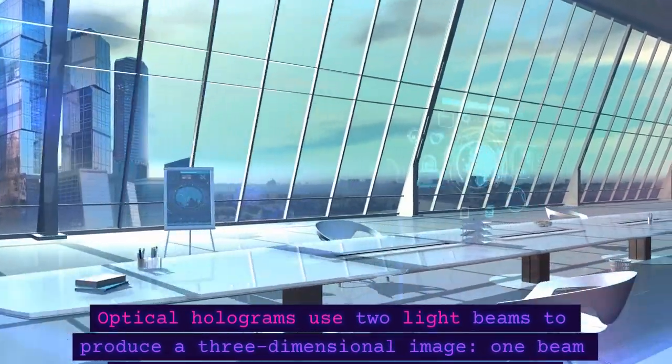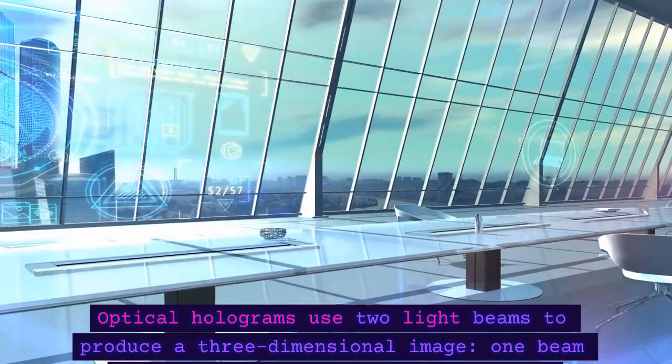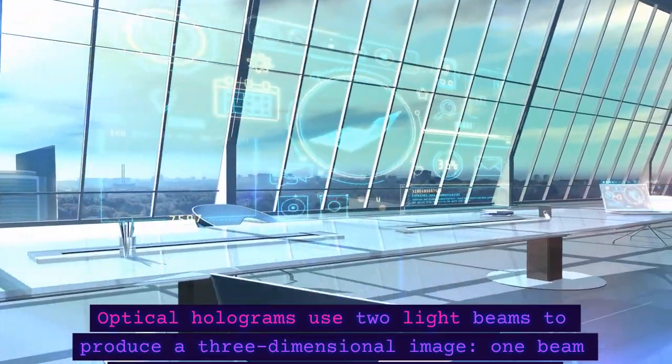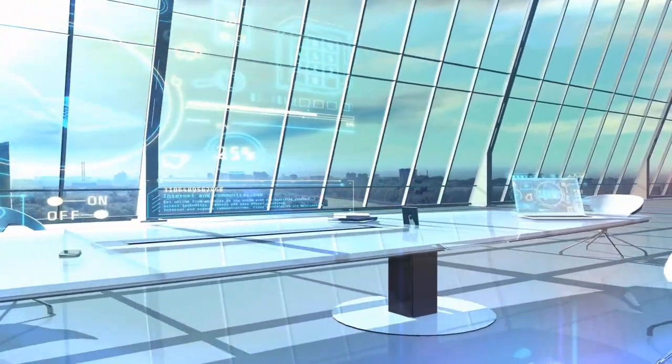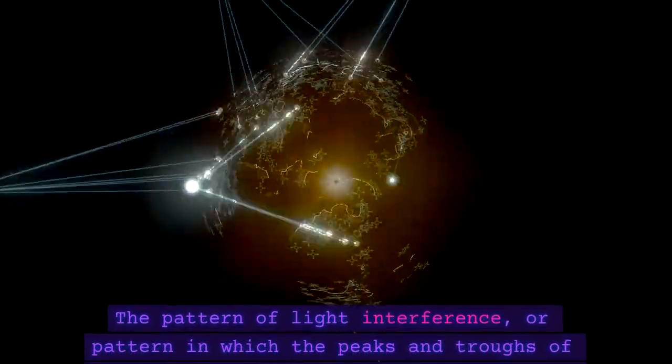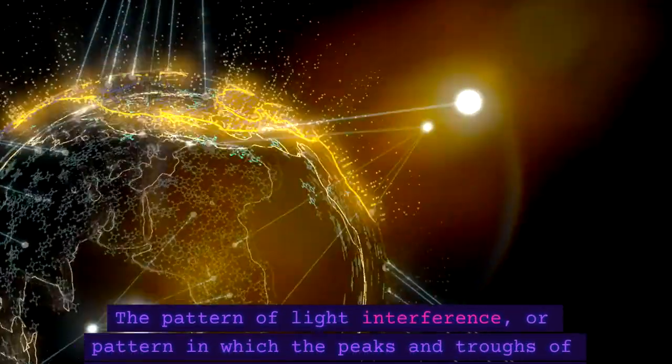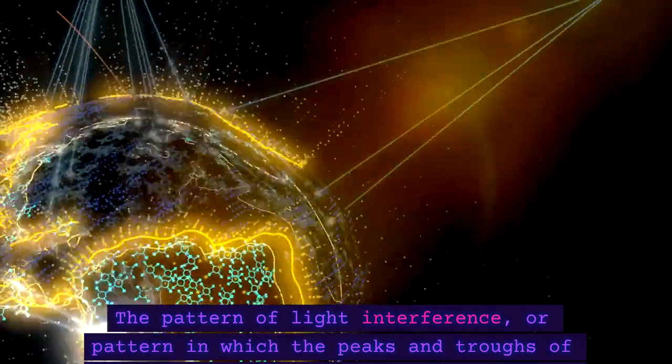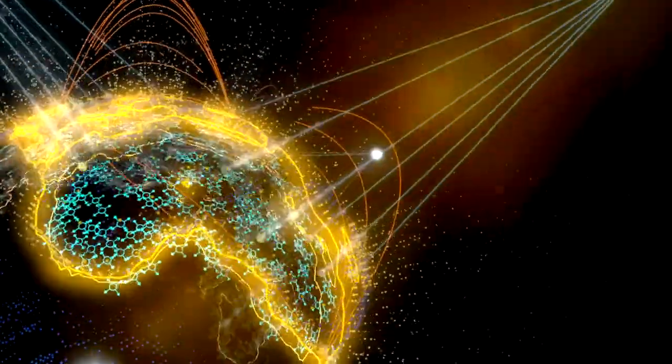Optical holograms use two light beams to produce a three-dimensional image. One beam shines on a recording media while the second beam strikes the item and reflects off of it. The pattern of light interference, or pattern in which the peaks and troughs of the two light waves add up or cancel each other out, is what gives rise to the hologram.